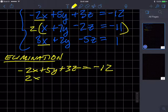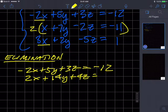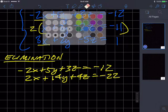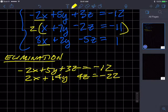So I'm going to get 2x plus 14y plus 4z equals negative 22. Why did I change the sign on that guy? I don't know why. This is wrong. This should still be negative. I should not have changed the sign. That should be positive, positive, negative, negative. Okay.